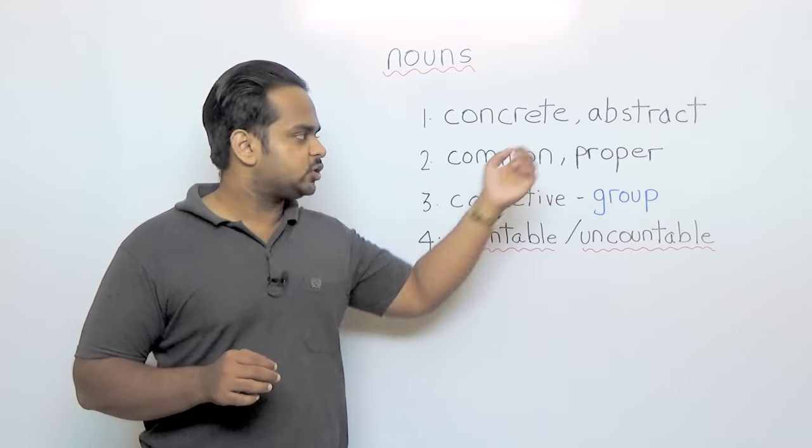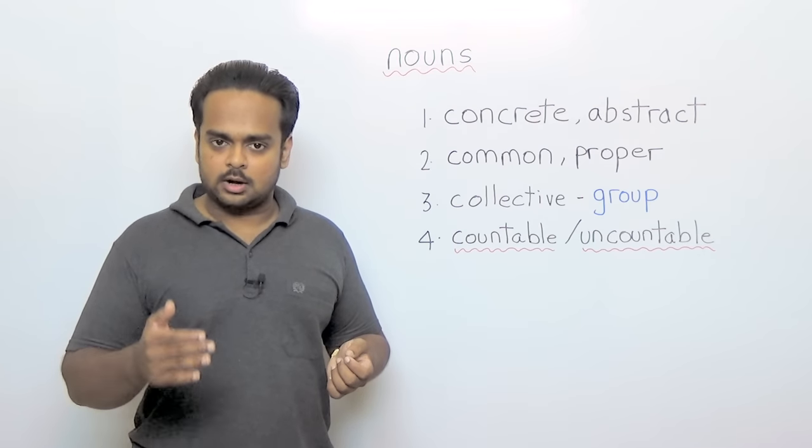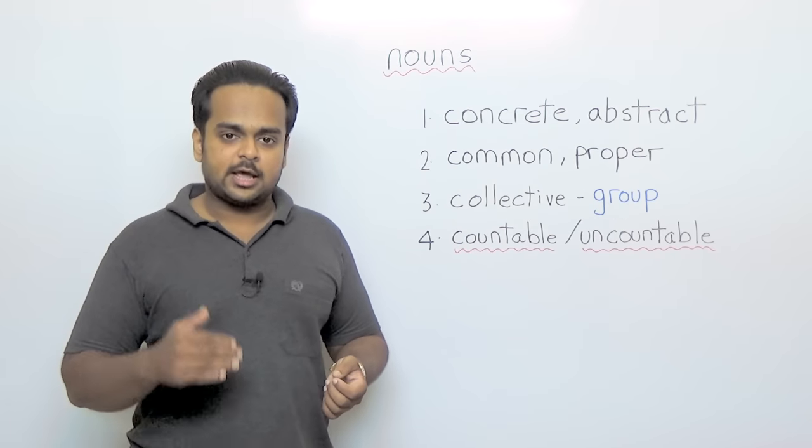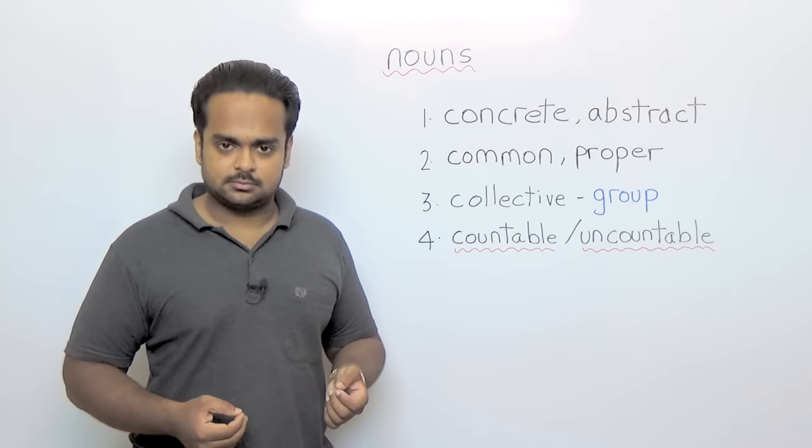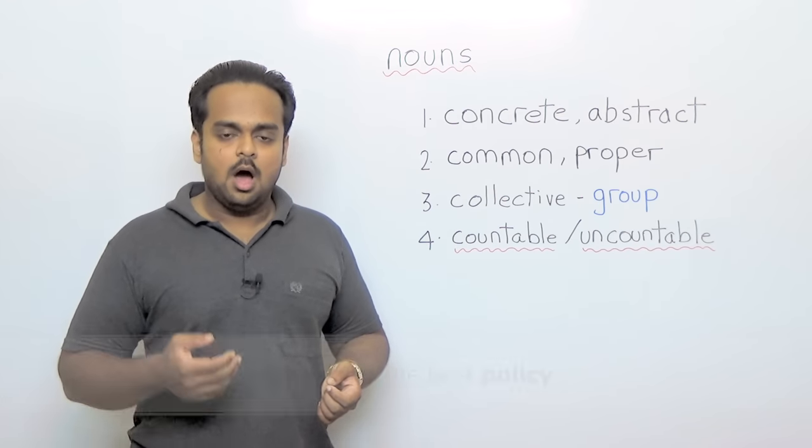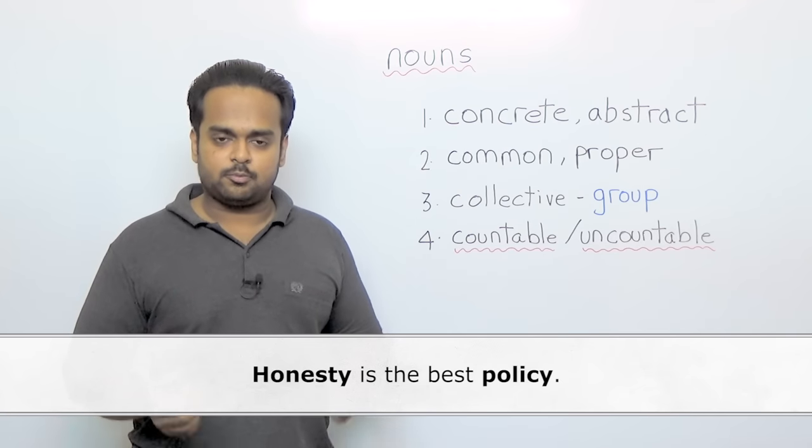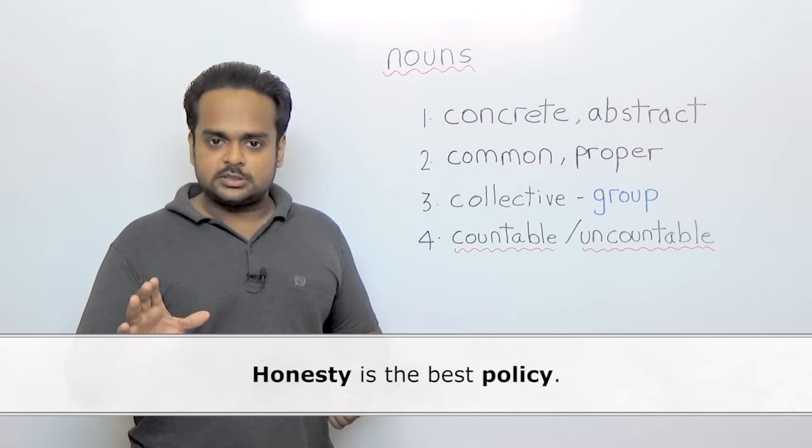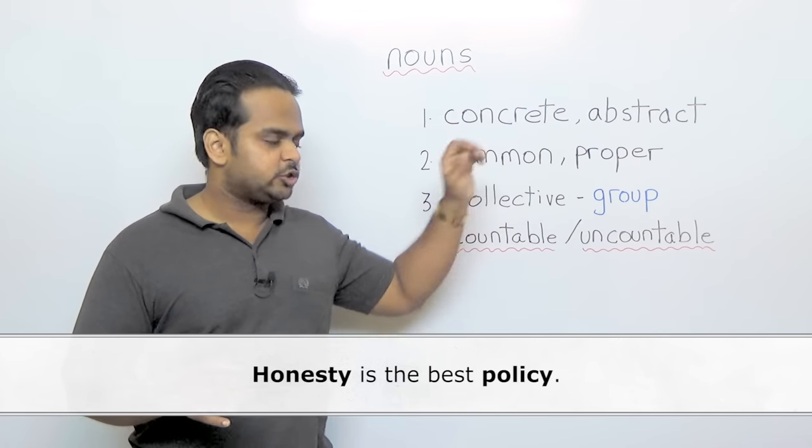So what are abstract nouns then? Abstract nouns are nouns that don't have a physical existence. That means we cannot touch them or see them, and these are ideas and feelings. Now in this sentence, honesty is the best policy—it's a very popular proverb in English. In that sentence, honesty and policy are both nouns but they are abstract nouns.